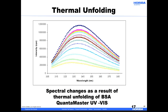We can also use the fluorescent spectrum to track changes in protein folding or unfolding. This is an example of how the fluorescence spectrum of tryptophan in a solution of 1 micromolar BSA looks with increasing temperature. These curves represent the spectrum going from 5 degrees to 70 degrees Celsius. You can see the spectral intensity decreasing as well as shifting to lower wavelengths as temperature is increased.